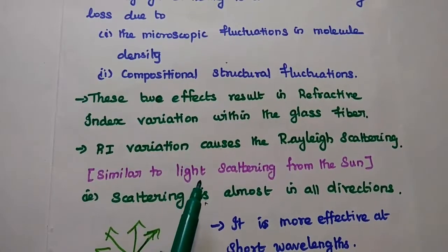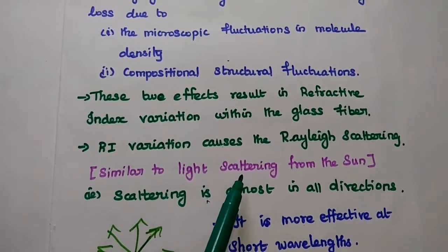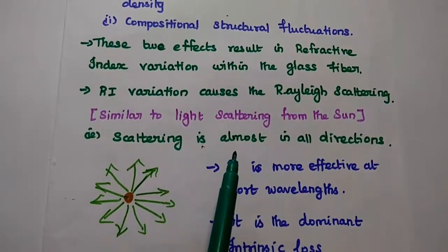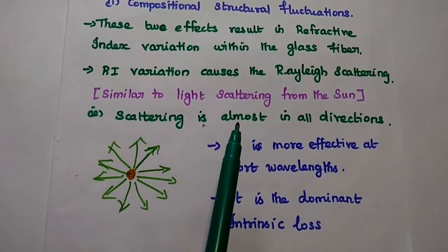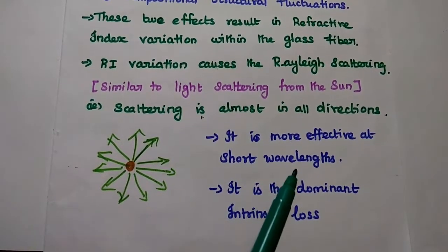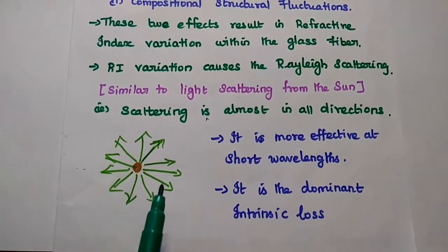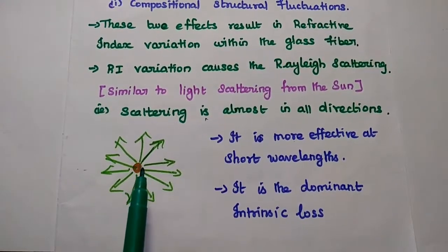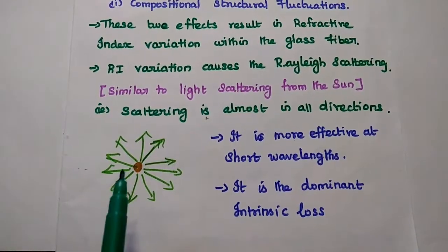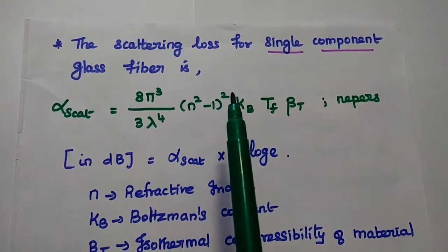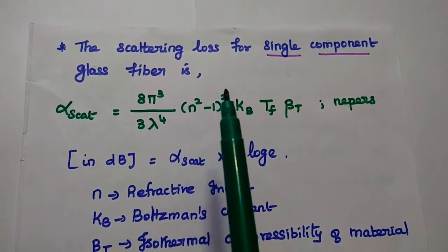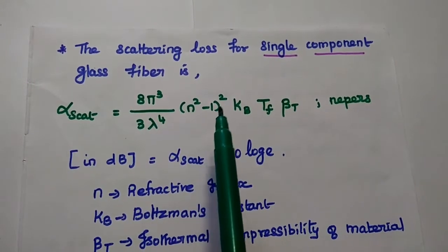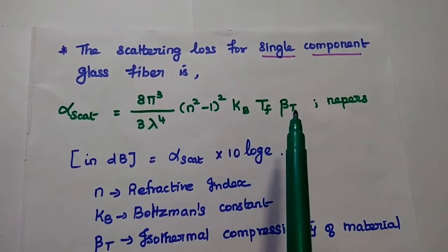This process is similar to light scattering from the sun, where scattering occurs in all directions from sunlight — that is why the sky appears blue. It is more effective at short wavelengths, and it is the dominant intrinsic glass scattering process, scattering in all directions with equal density. The scattering coefficient for single-component glass fiber is given as: (8π³ / 3λ⁴) × (n² − 1)² × k_B × T_f × β_T.